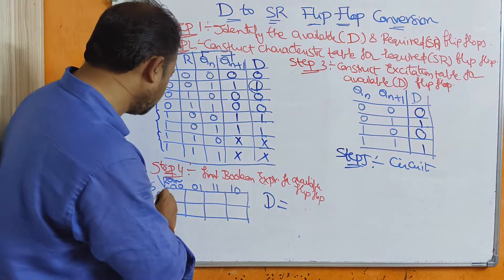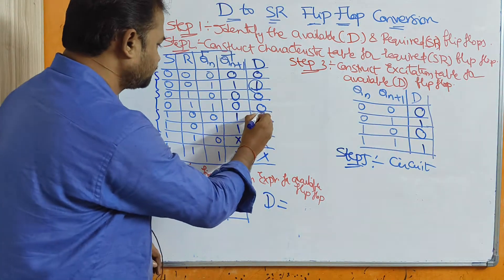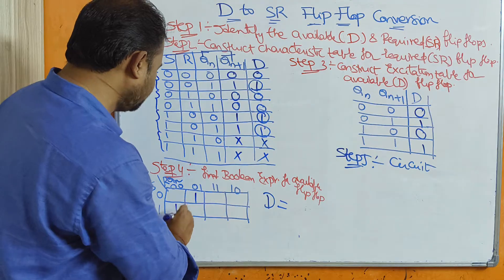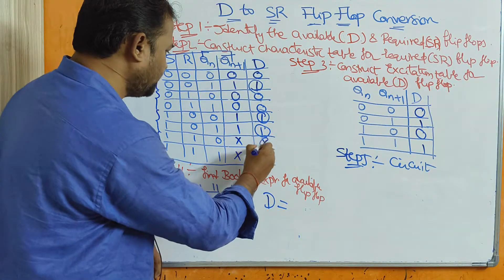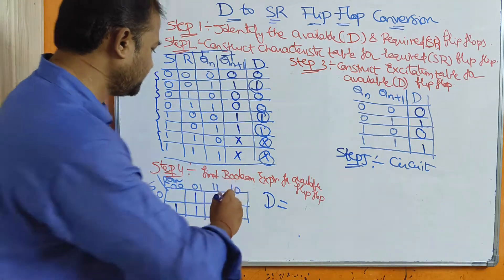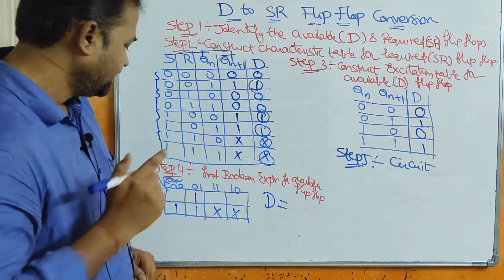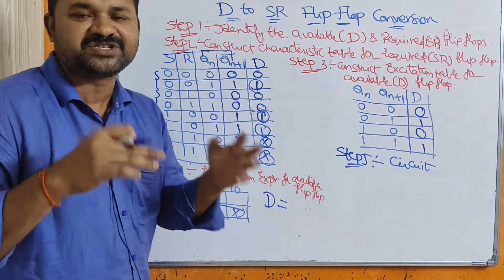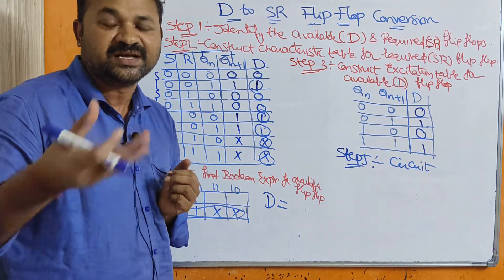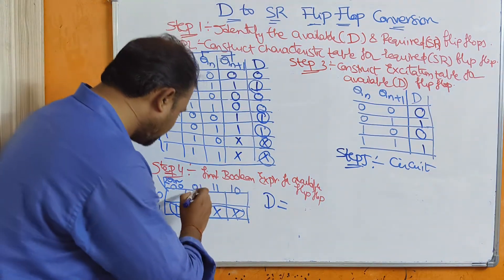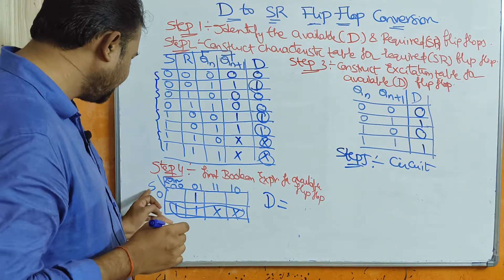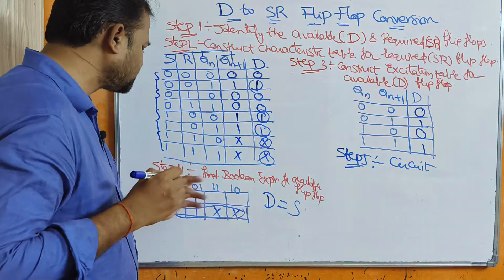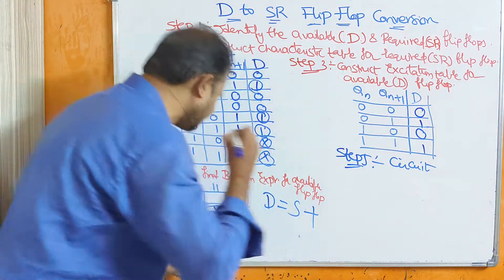Filling in the K-map values: positions 001 give 1, 001 gives 1; then for S=1 with R,Qn combinations 00, 01, 10, 11 we get values 1, 1, 1, 0, and for the last two combinations with SR=11, we place don't care entries. We can make four cells into a group, because a group with more cells produces fewer literals. For this group, S value is 1 while R and Qn are changing, so we do not need to consider R and Qn — giving us the term S.